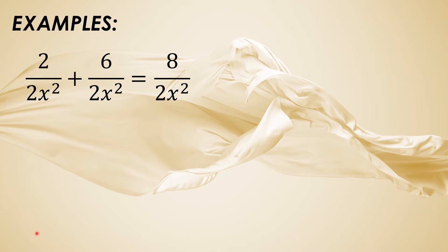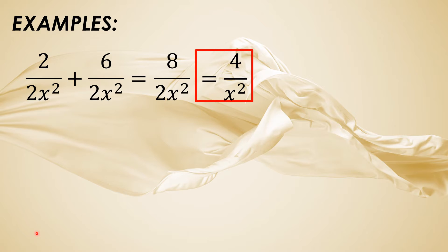But as you can see, we can simplify — we can divide 8 by 2. So 8 divided by 2 is 4, and the final answer is 4 over x squared. Paano ba napunta sa numerator ang 4 at hindi sa denominator? Because we find the common factor of 8 and 2. Since we can divide both numbers by 2, 8 divided by 2 is 4, and 2 divided by 2 is 1. So 4 divided by 1 is 4.